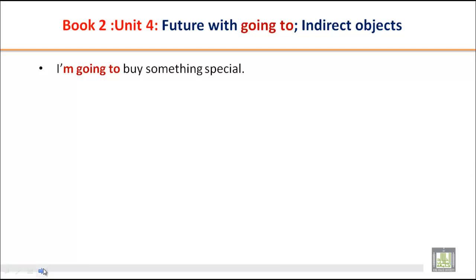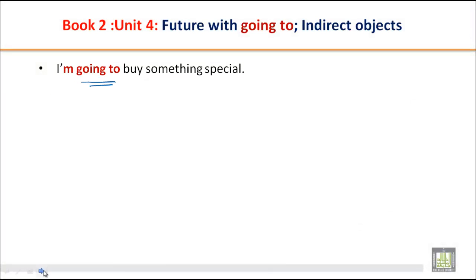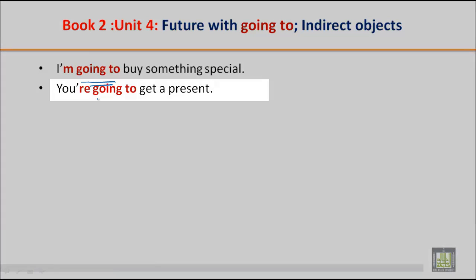Let's look at the first example: 'I'm going to buy something special.' So 'going to' here tells you about the future. 'I'm going to buy something special' means that in the future you are going to buy something special — maybe this evening, tomorrow, next week, or whatever.